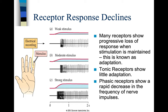Many receptors show a progressive loss of response when stimulation is maintained — this is known as adaptation. If you get a splinter in your finger, at first it really hurts, but after 20 or 30 seconds, the pain isn't nearly as intense because you have adapted to it. Your body is reacting to the pain by adapting, making the pain go away so that you can react in a more positive manner. Interestingly, as you say 'ouch' and start crying, the pain actually goes away because your body and brain are dealing with it.